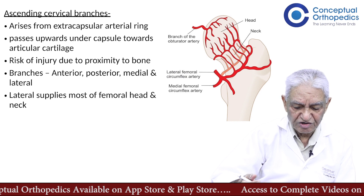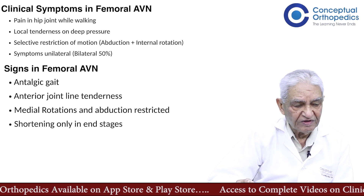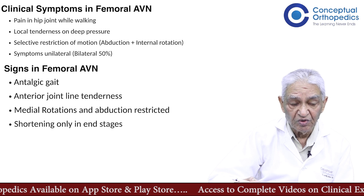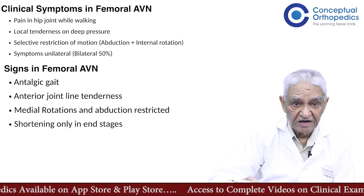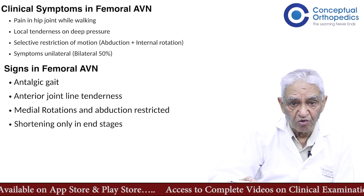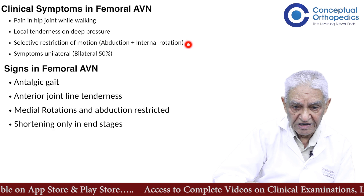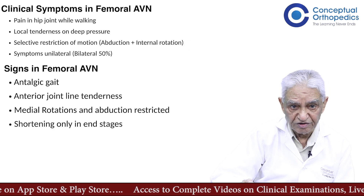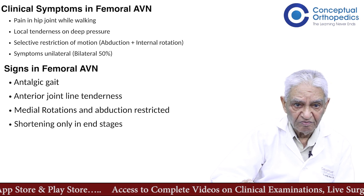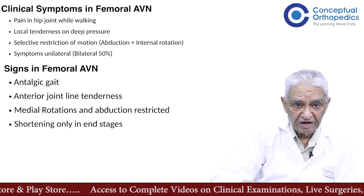This is another example of the precarious blood supply of the femoral neck. What are the clinical symptoms? We should be conscious of this condition. If a patient comes with pain in the hip joint, difficulties in walking, more pain when walking, and sometimes local tenderness, AVN should be considered. One important finding is selective restriction of movements — in the hip joint it is abduction and internal rotation which get restricted. Some cases are unilateral, but in long-standing cases the other hip joint may also become involved.